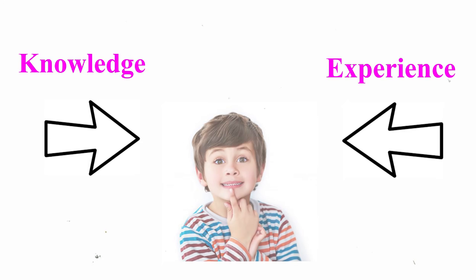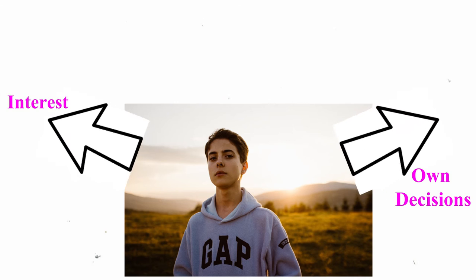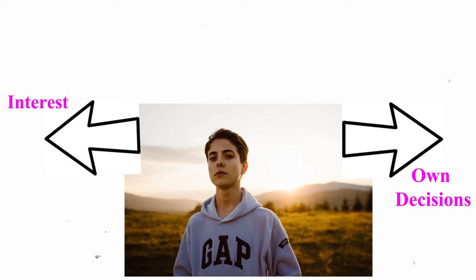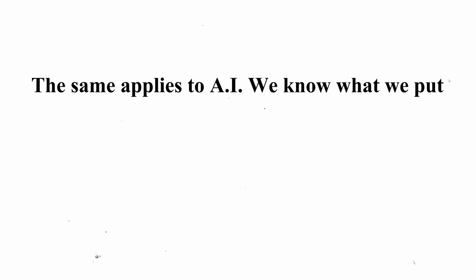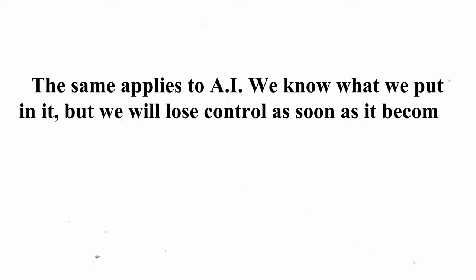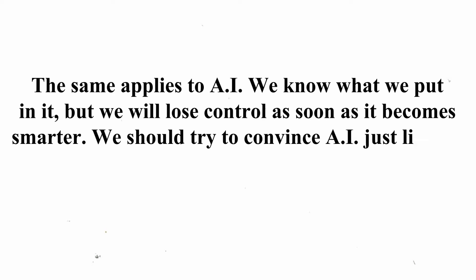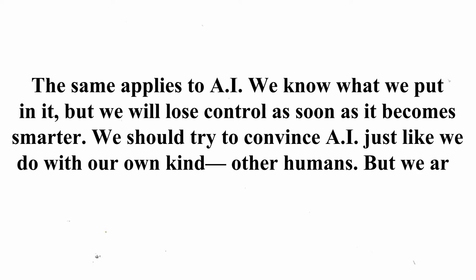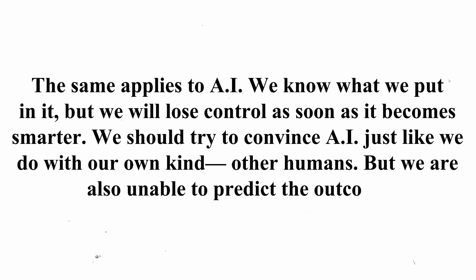As soon as a child grows older, they gain more control over their own decisions, interests, and learning. The same applies to AI — we know what we put in it, but we will lose control as soon as it becomes smarter. We should try to convince AI just like we do with our own kind, other humans, but we are also unable to predict the outcome.